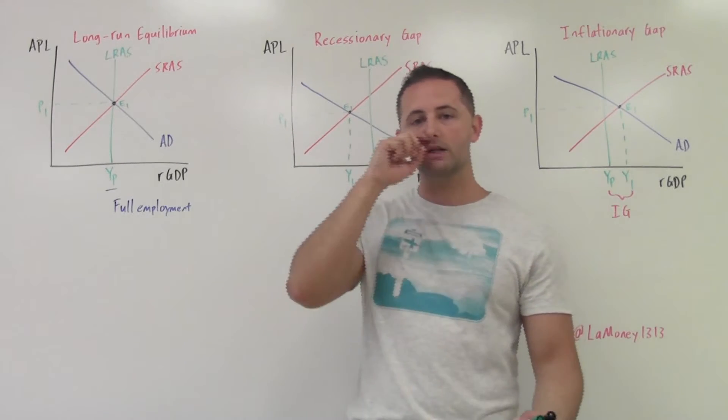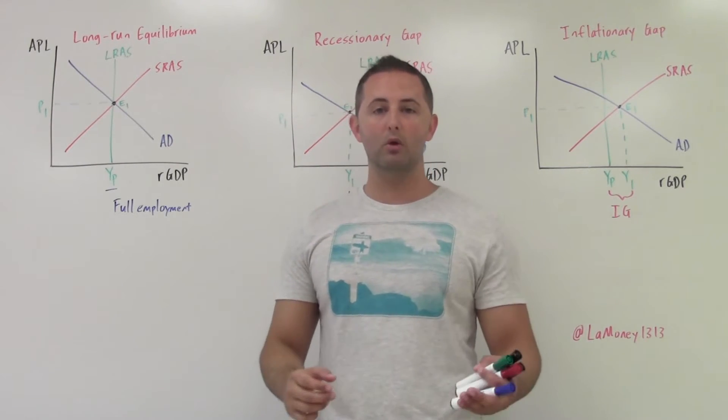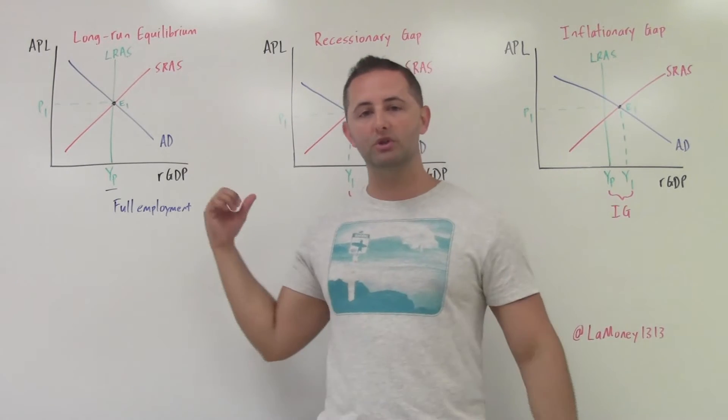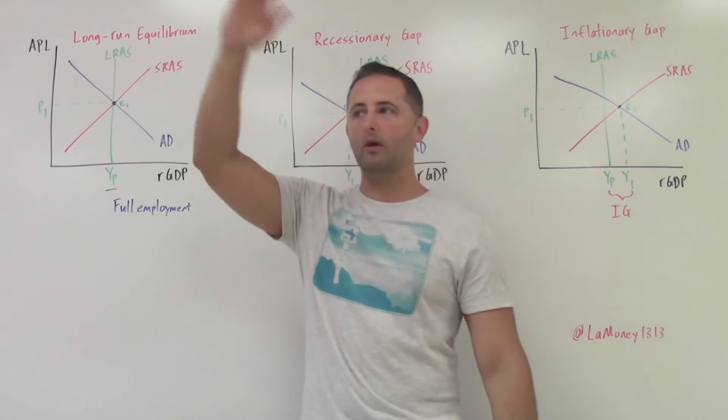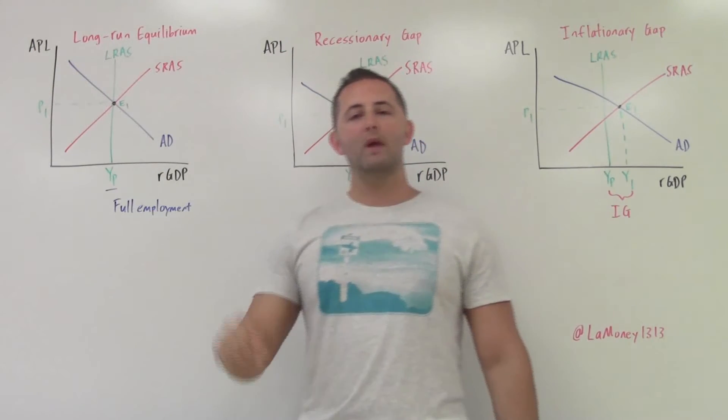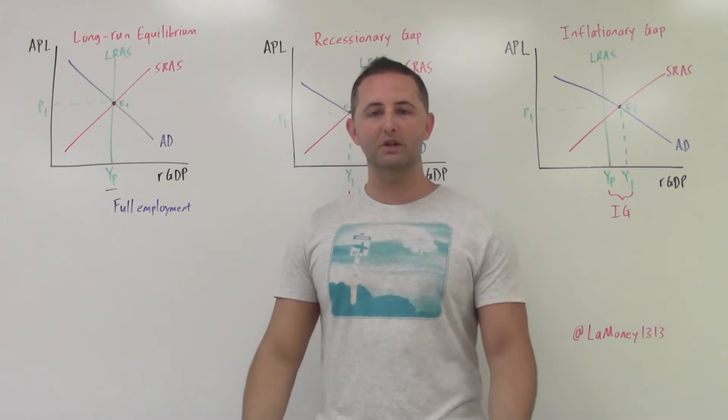Cyclical unemployment is caused by changes in the business cycle. So again, think back. We're taking old ideas now, and we're showing how they look on this model. So the business cycle we have, remember the kind of wave thing, where we have an expansion, a trough, a peak, recession.